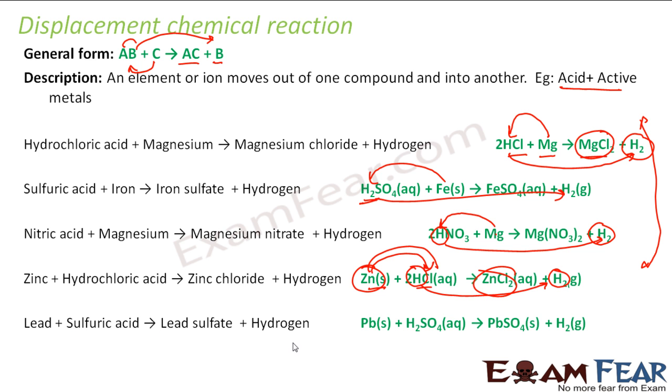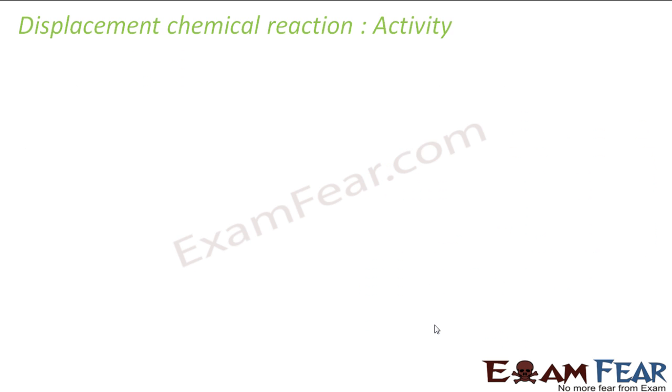So that is the reason why it happens. Right, so we will learn all these things in class 11th but just for now you can understand that this is the kind of displacement chemical reaction where one element displaces another. So here also lead plus sulfuric acid becomes lead sulfate and hydrogen. This guy lead kicked out hydrogen and hydrogen is out now and this becomes lead sulfate. So this is my example of displacement chemical reaction.